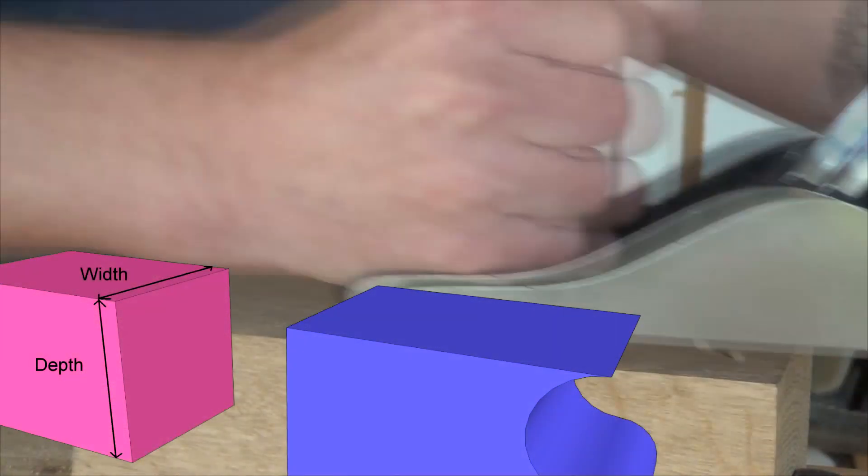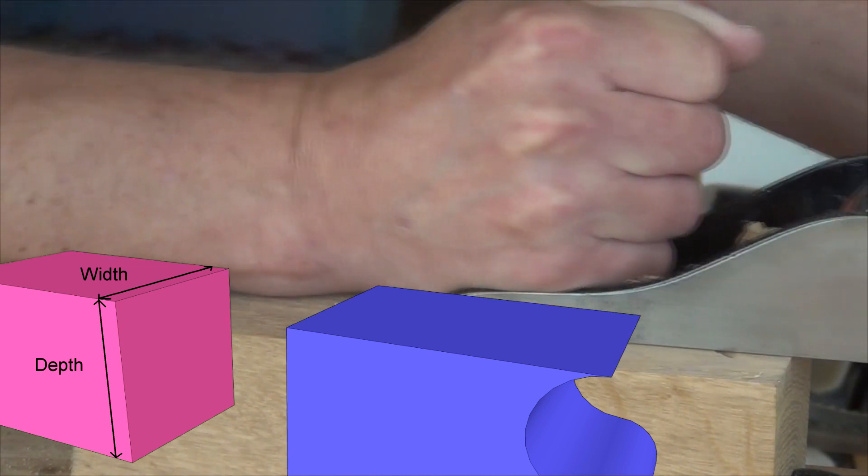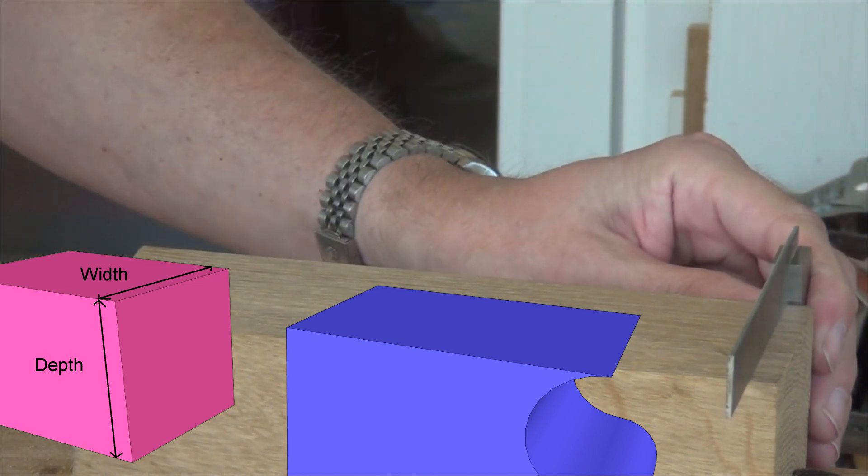Create a face side and a face edge to both beam ends, then prepare them to the right width and depth, squared all round and with squared ends.